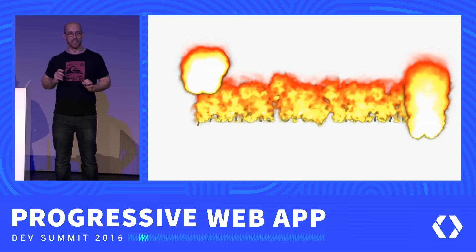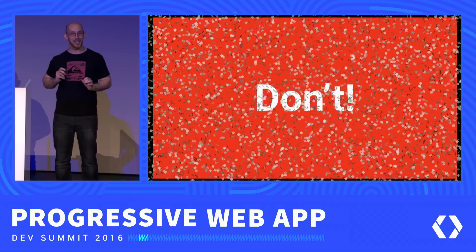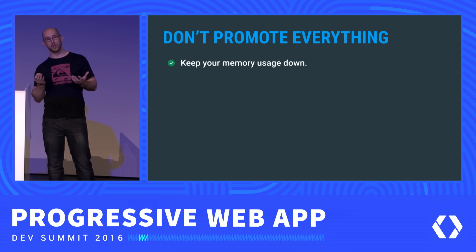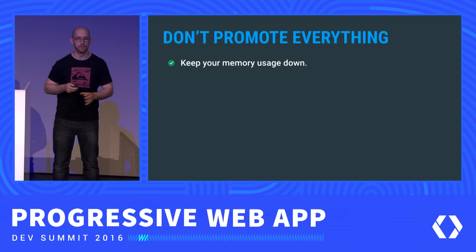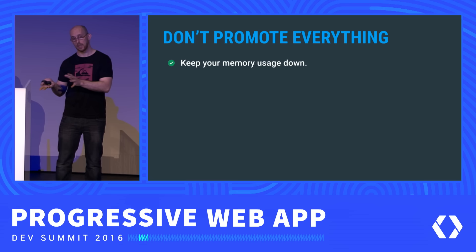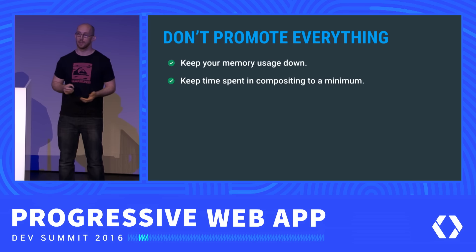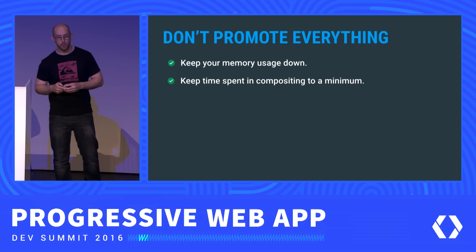You may be sitting there thinking, "Goodness me, that seems like a great idea — star will-change: transform." Burn that from your mind — don't do it! There are two reasons. First, you'll want to keep your memory usage down, especially on mobile. If you create layers, you're going to use memory, have GPU textures, and management overhead, so you want to do this as needed. Second, you want to keep your time in compositing to a minimum — if you made lots of layers, that's a lot of depth sorting and management.